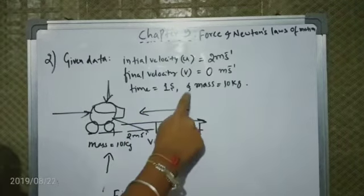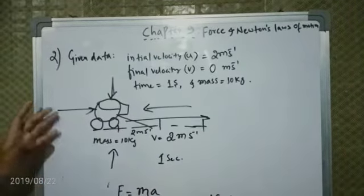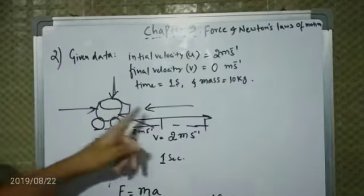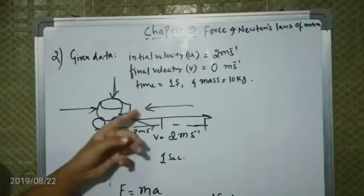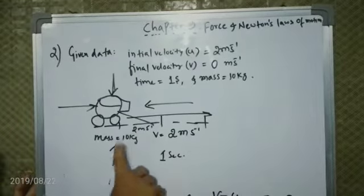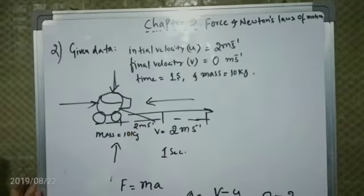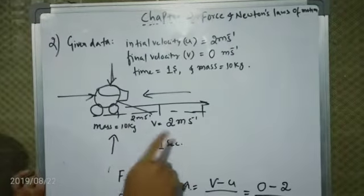The object is coming from the left side with a mass of 10 kg and velocity of 2 m per second. We have to apply force from the right side to stop it in 1 second.